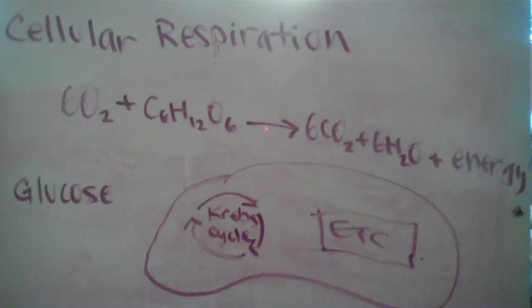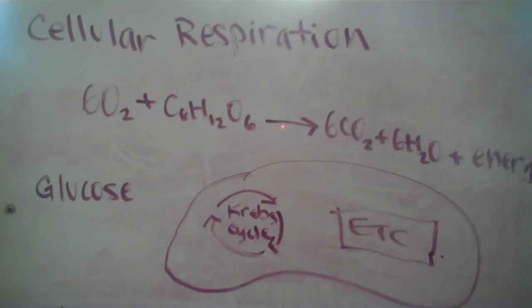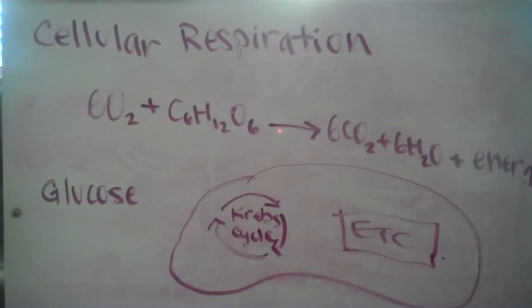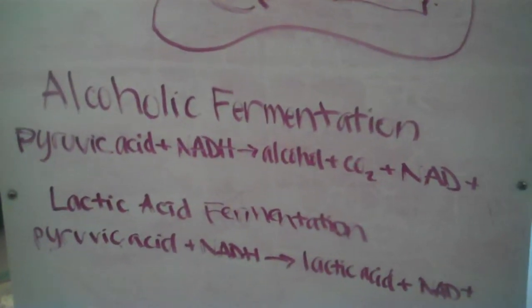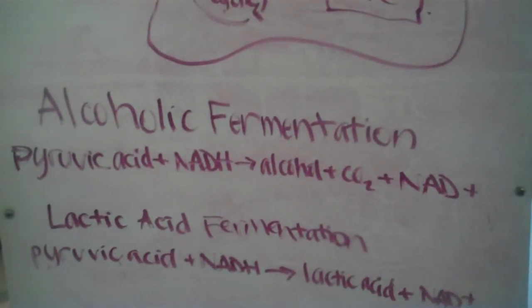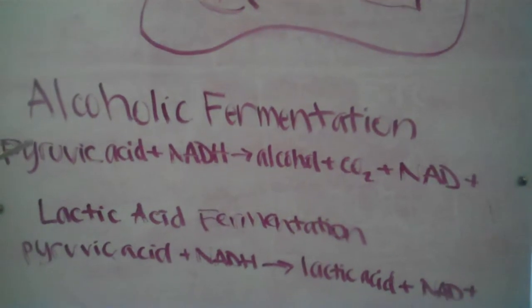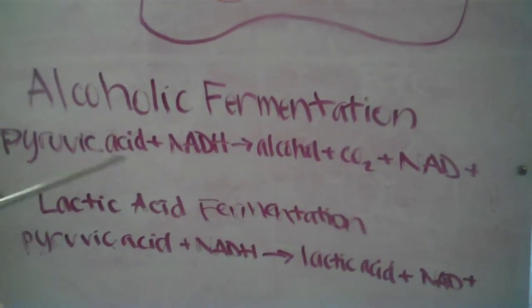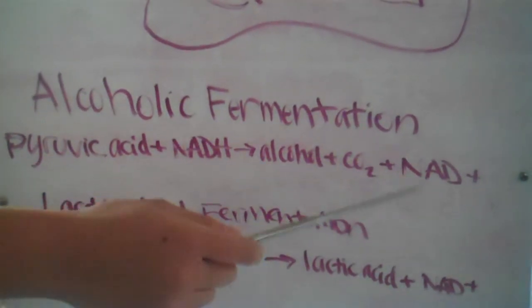But if no oxygen is available, some cells can undergo fermentation. The two main types of fermentation are alcoholic fermentation and lactic acid fermentation. The equation for alcoholic fermentation has reactants of pyruvic acid and NADH, and the products are alcohols, carbon dioxide, and NAD+.